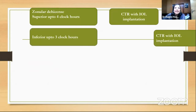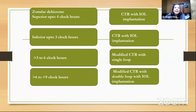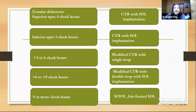Intraoperatively, you have to assess the situation and follow this algorithm. If there is a zonular dehiscence, you put in a CTR. If it is inferior, again a CTR. If it is greater than three to six o'clock, you can put a modified CTR. If the dehiscence is very large, you may need more devices. If the subluxation is very large and you cannot proceed with extracapsular surgery like SICS, then you remove the lens and do a fixated IOL — scleral fixated or iris fixated.